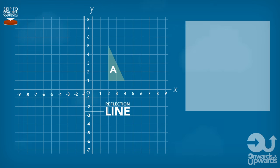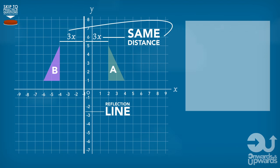The reflection line reflects the shape on the grid onto the opposite side of the reflection line, forming a reversed shape, the exact same distance as the first shape from the reflection line.